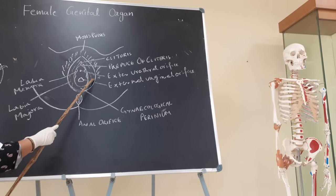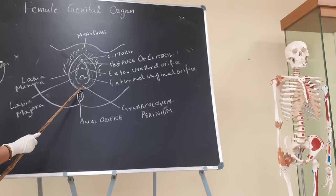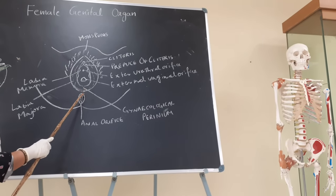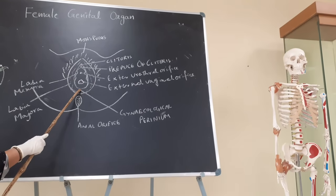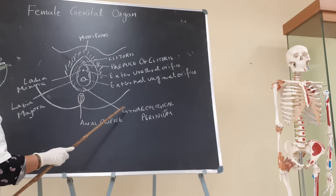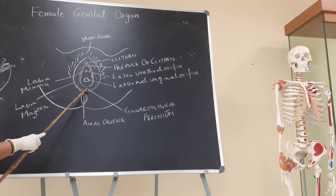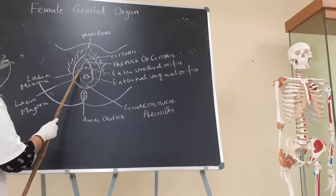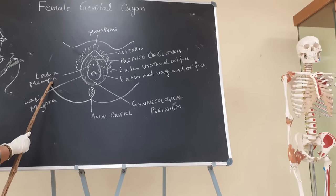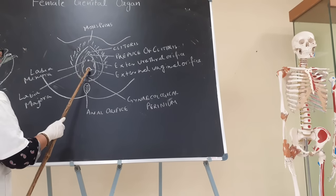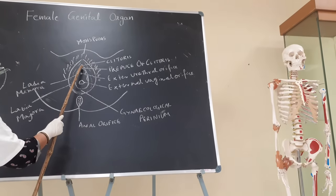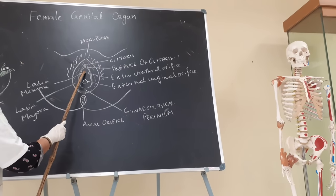The two labia majora unite posteriorly at the posterior commissure. The area between the anal orifice and the posterior commissure, which is 2.5 to 3 cm anterior, is called the gynecological perineum. The vestibule is the space between the two lips of the labia minora, and it has the opening of the urethral orifice and the vaginal orifice. The urethral orifice lies 2 cm below the glans clitoris.